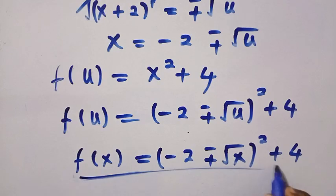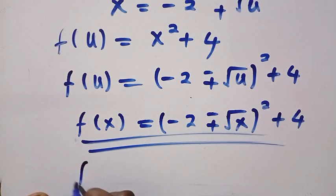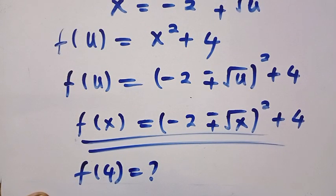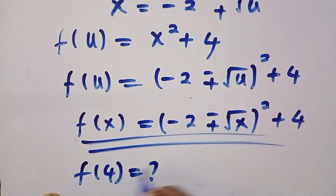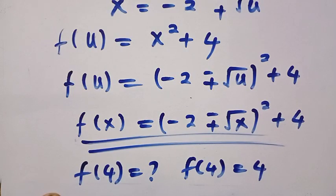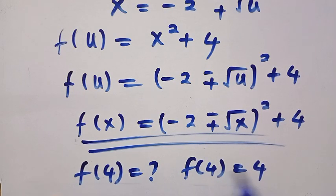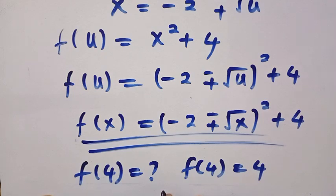This gives us the final answer for f of x. But a question is asked: suppose we are given the condition that f of 4 equals 4. Since we have a plus or minus, we are going to get two answers and we consider which one satisfies the condition.